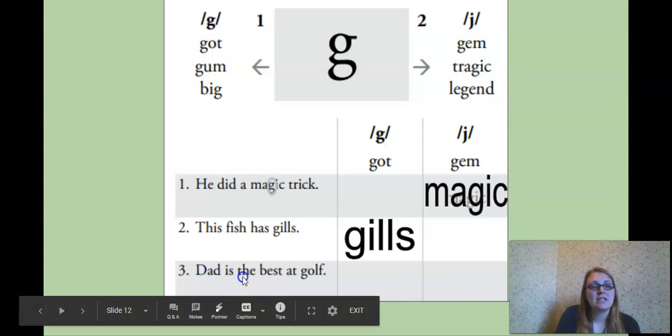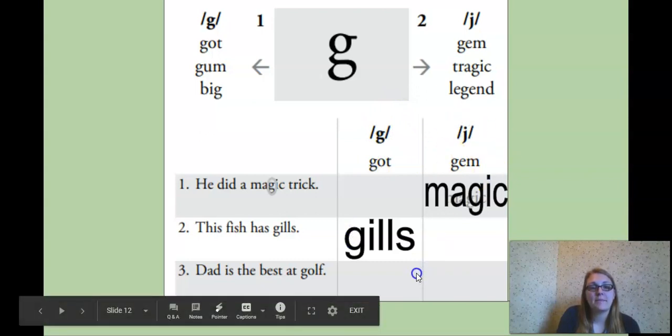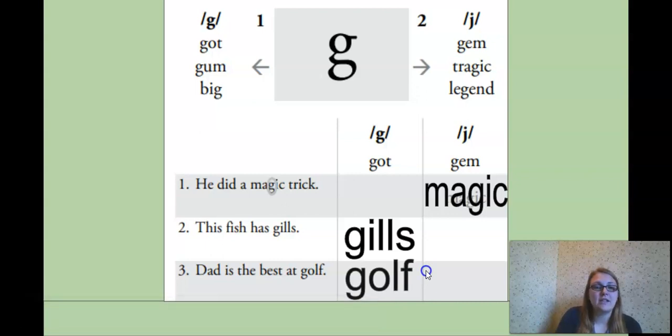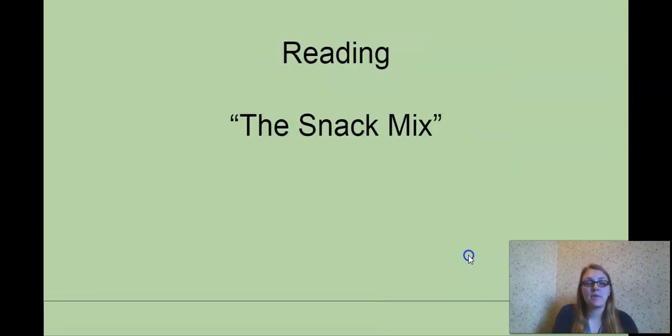Number three. Dad is the best at what? Is he the best at golf or jolf? Good. Dad is the best at golf. So that's just what you're going to do when you're working on your individual lesson. Look at the word with a G. Sound it out. Is it a guh or a juh sound? And select the correct one. Again, that will be on the Google Forms. All right.